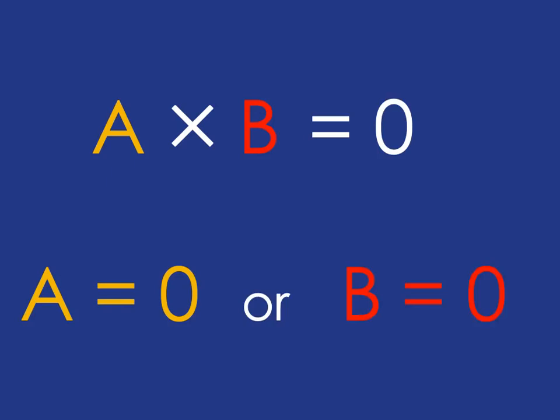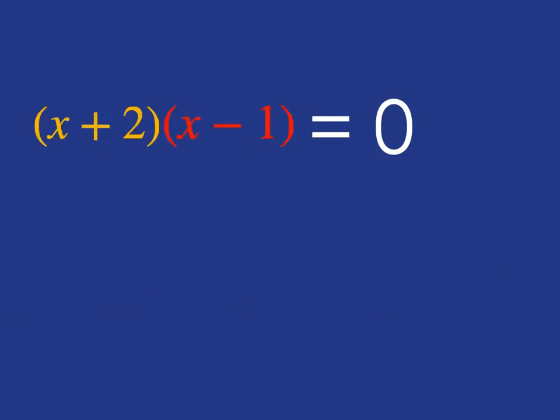Let me now move this into really nice looking equation form. So here we've got exactly the same scenario. Two things multiplied together to give you zero as an answer. Now, as we've just seen, if you've got x plus two, one thing, multiplied by x minus one, another thing to give you zero, what are the options?